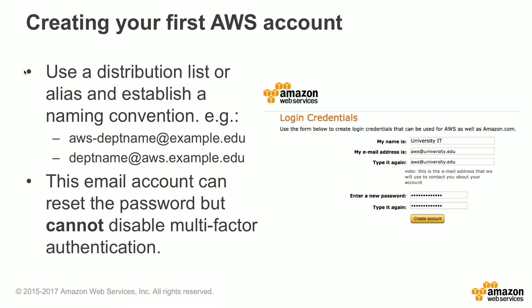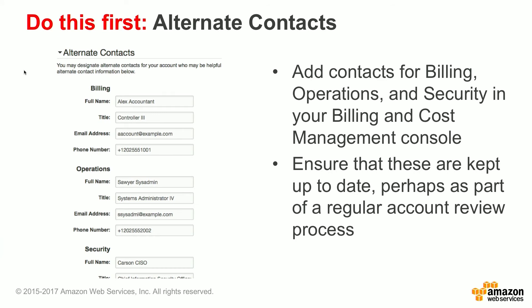When creating your first AWS account, you'll want to create a distribution list or alias in your organization to set the root account to — similar to AWS-department-name or department-name. You don't want to use a personal email address. This email account can reset the password but cannot be used to disable multi-factor authentication. After you create your account, go into alternate contacts and add contacts for billing, operations, and security. You want to ensure that these are kept up to date, perhaps as part of a regular account review process.